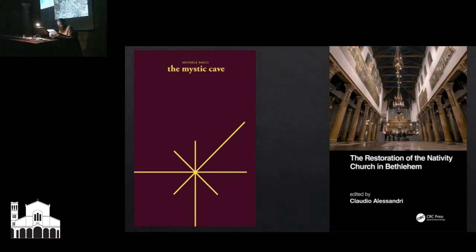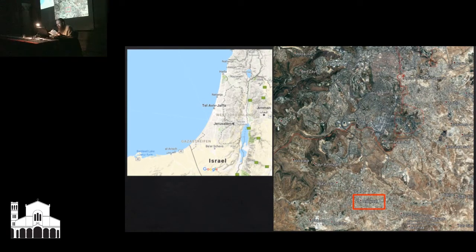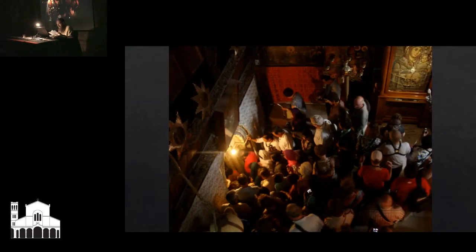First, it must be stressed that Bethlehem is not just a church. It's a very special place belonging to a wider network of holy sites that define the status of exceptionality attributed to Palestine by Jews, Christians, and Muslims. Located about nine kilometers to the south of Jerusalem, Bethlehem has been an obvious goal for pilgrims since at least the third century AD, meaning that visitors to Bethlehem have been more religiously than aesthetically motivated.